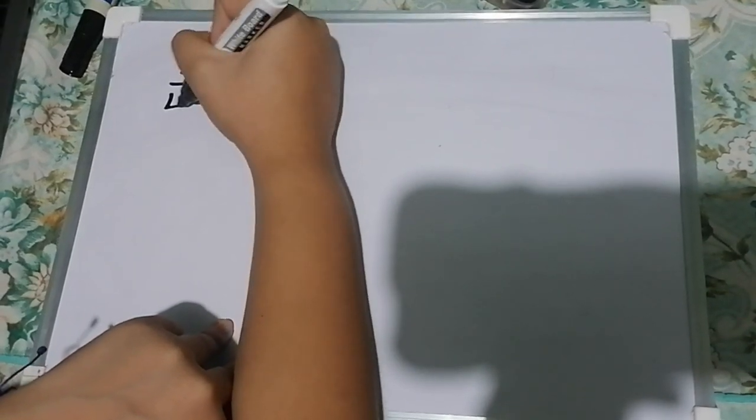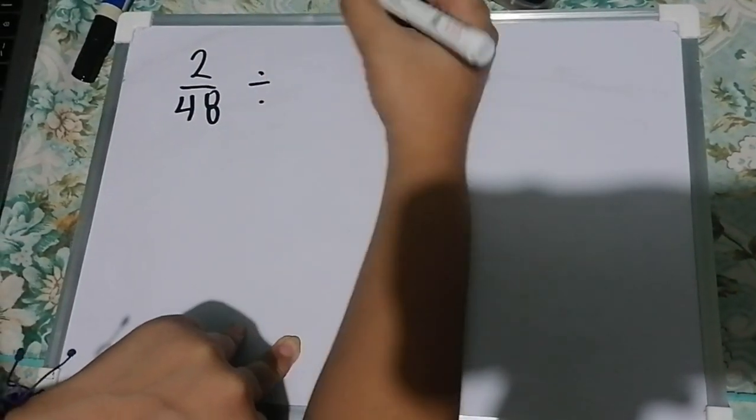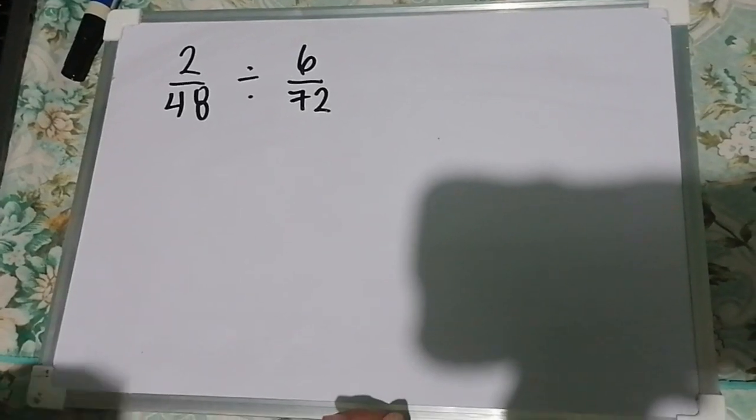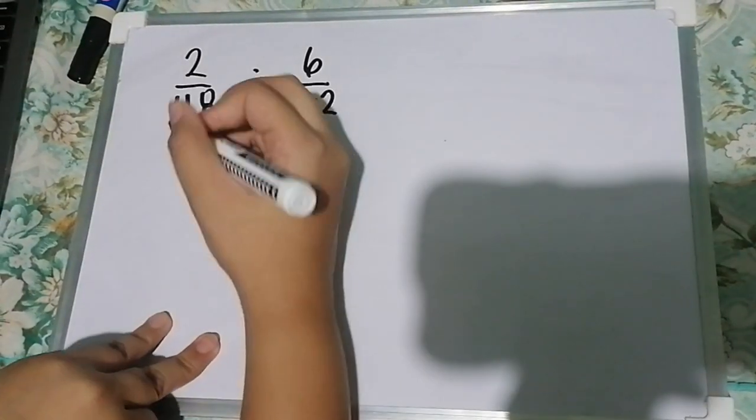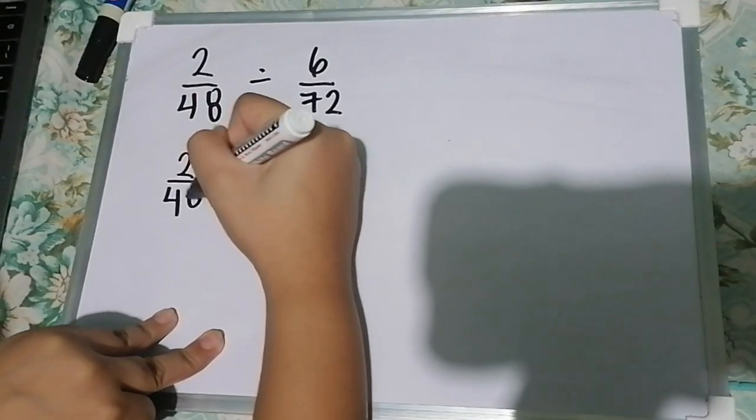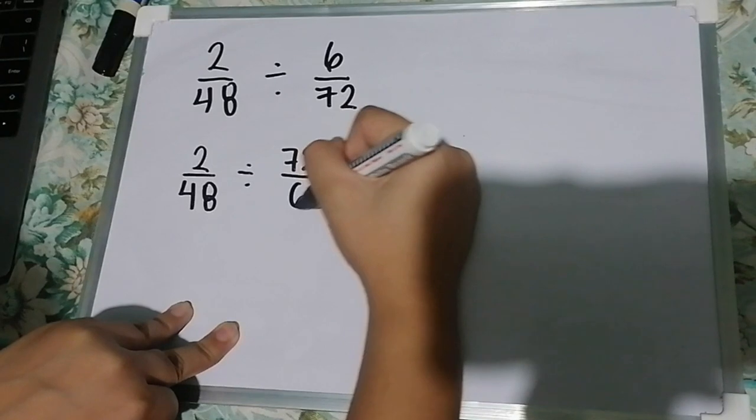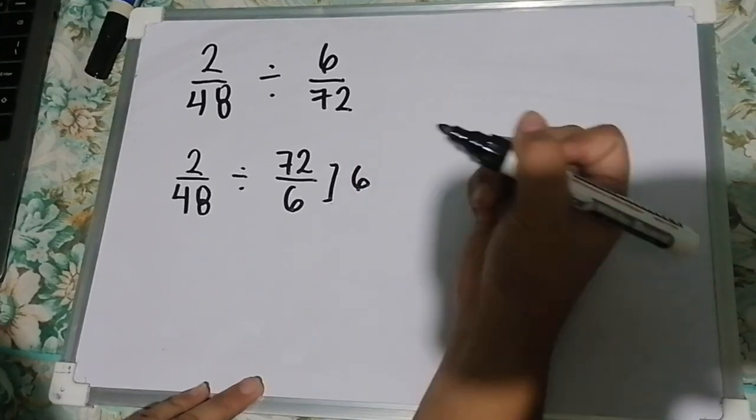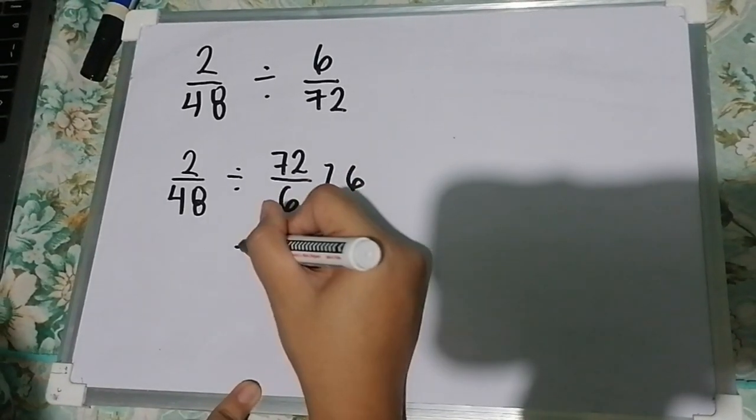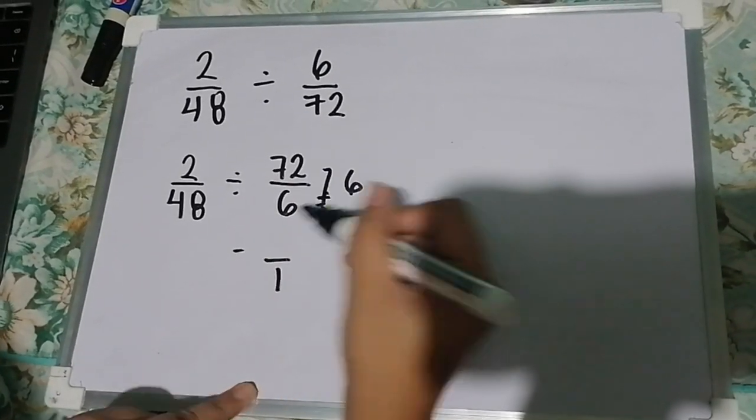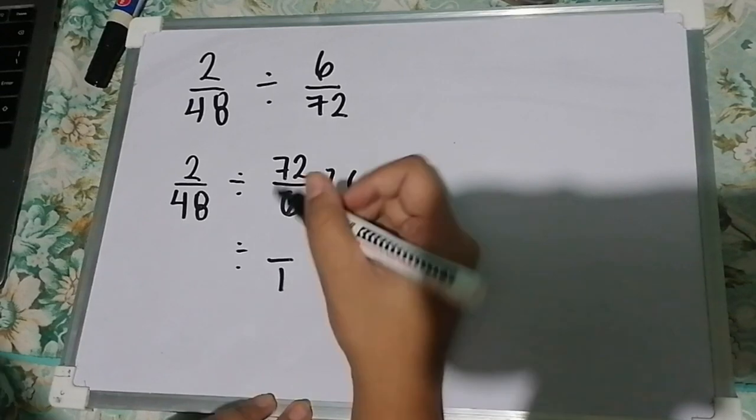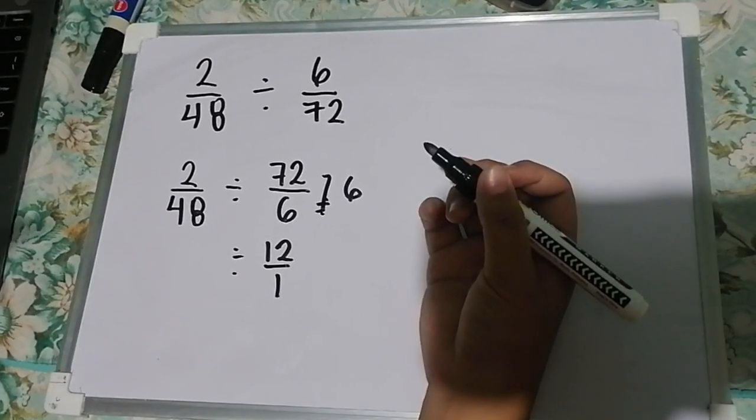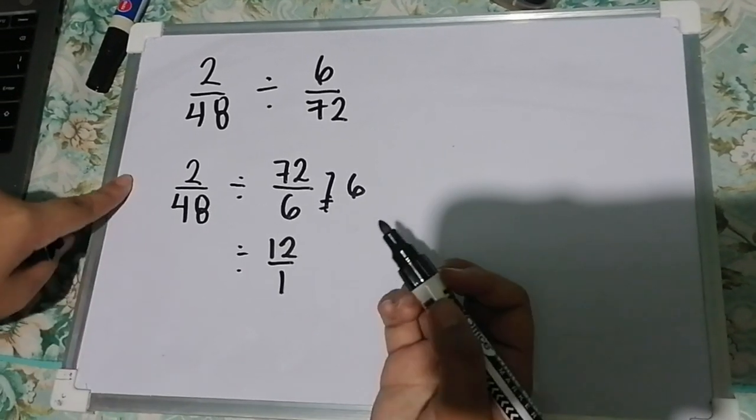So, 2/48 divided by 6/72. The first thing we have to do is reciprocate the numbers. So we have 2/48 divided by 72/6. Since the common factor of 72 and 6 is 6, we divide by 6. 6 divided by 6 equals 1, and 72 divided by 6 is 12. So in simple form, that's 12/1. Since we still need to multiply, let's continue. Bring down 2/48.